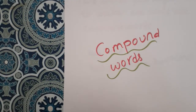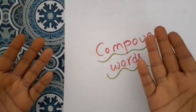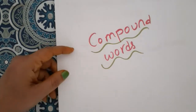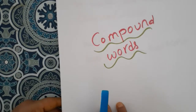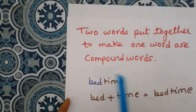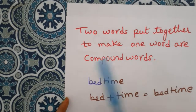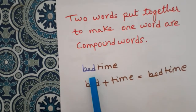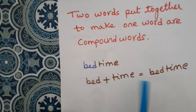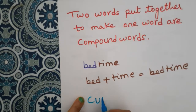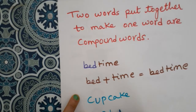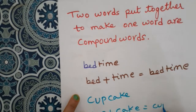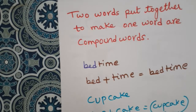For example, fish plus bowl gives us fishbowl. Cup plus cake gives us cupcake. Another example: bed plus time gives us bedtime. Two words put together to make one word — those are compound words.